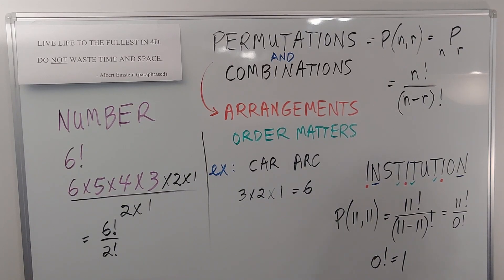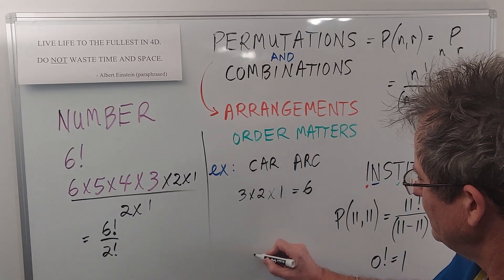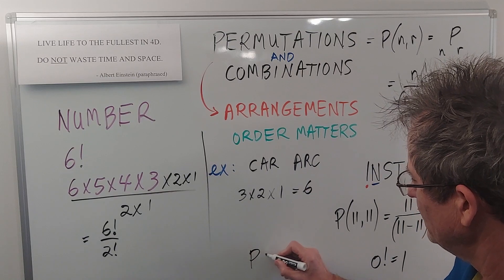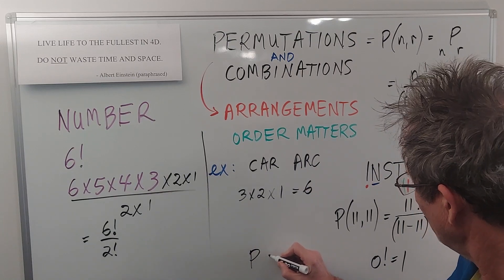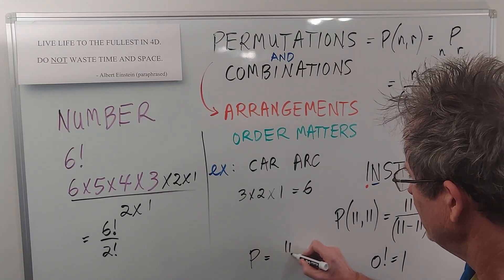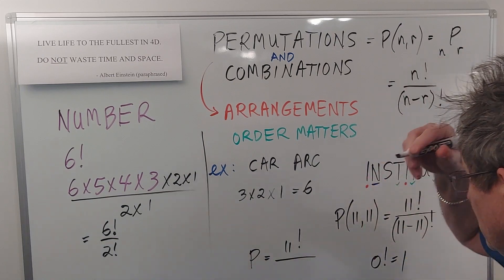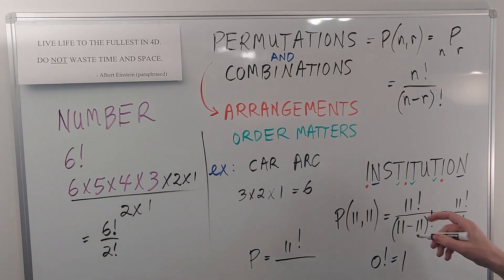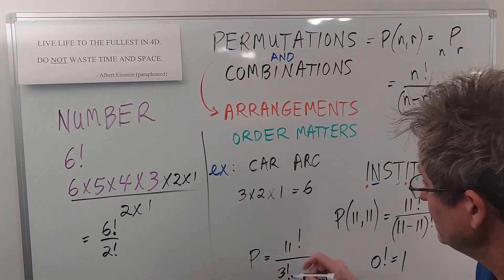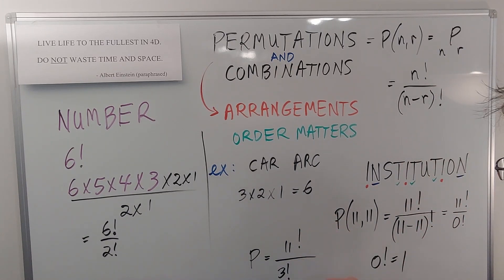Okay, but because those letters are the same, the number of permutations for the word INSTITUTION would only be 11 factorial divided by, in the case of the i's, 3 factorial, because there's six ways to rearrange those.